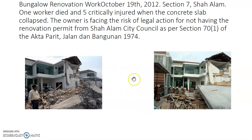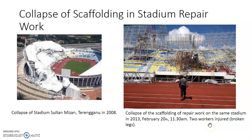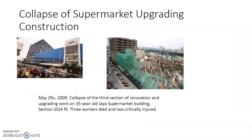This collapse or failure of structure involved one worker who died and five critically injured when the concrete slab collapsed. Another example is the stadium at Terengganu in 2008. The first collapse in 2008 was due to the slabs, and then another collapse of scaffolding during repair work occurred in 2013, where two workers were injured with broken legs. This stadium in Terengganu experienced failure twice.